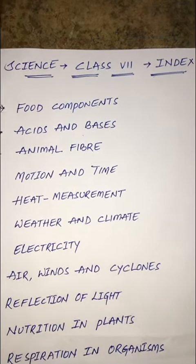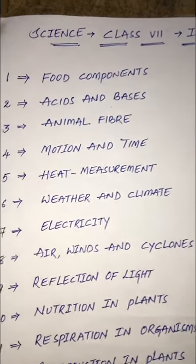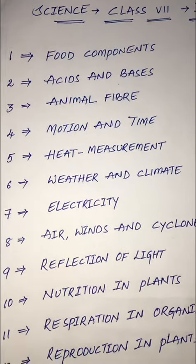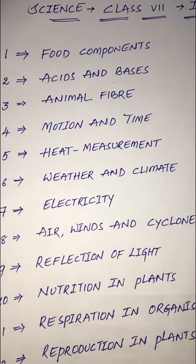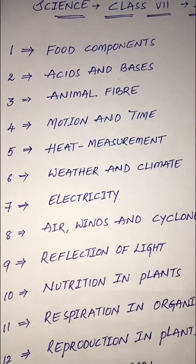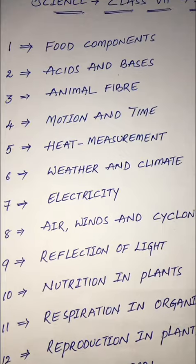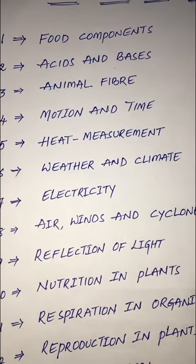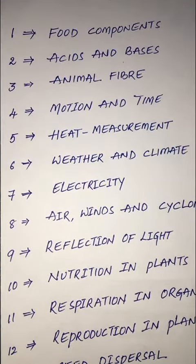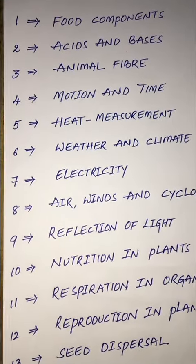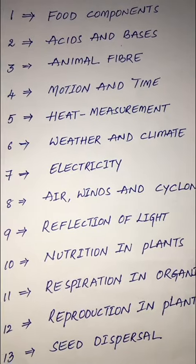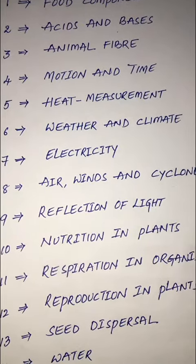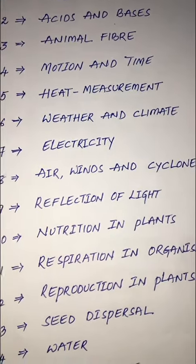Seventh class index science. Lesson one: food components. Lesson two: acid and bases. Lesson three: animal fiber. Lesson four: motion and time. Lesson five: heat measurement. Lesson six: weather and climate. Lesson seven: electricity. Lesson eight: air, winds and cyclones. Lesson nine: reflection of light.